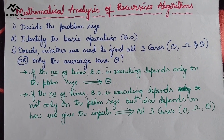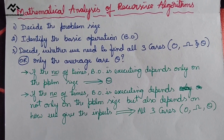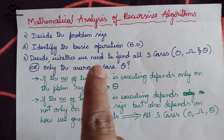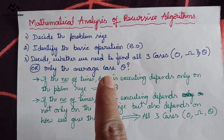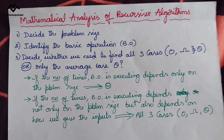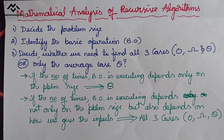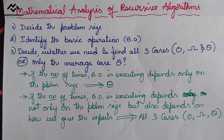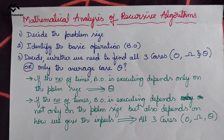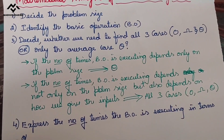So the first three steps are the same as in non-recursive algorithm analysis: decide the problem size, identify the basic operation, and decide whether we need to find all three cases or only the average case. If the number of times the basic operation executes depends on how we give the input, then we need to find all three cases; otherwise only the average case.